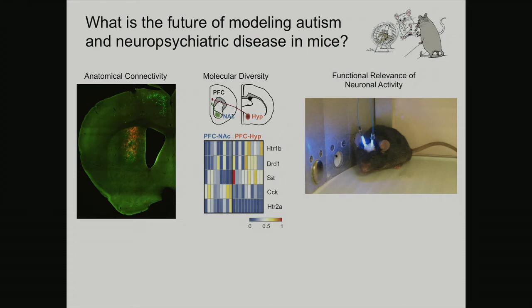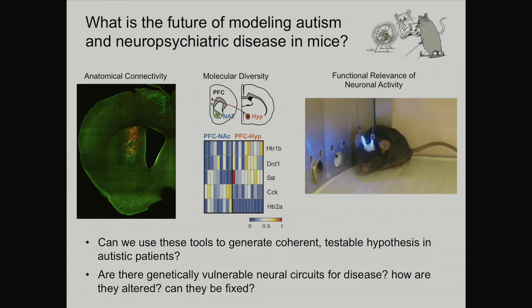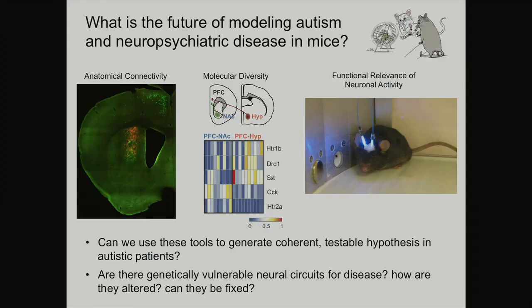We have incredible tools in mice: we can examine very specific types of anatomy — who's connected to whom — and pair that with sequencing to understand things at the molecular level. We also use optogenetics: we put in a protein that allows us to control neural activity with light, manipulating neuronal activity in real time. The key questions moving forward are: can we create hypotheses testable in people, what neural circuits are vulnerable to disease, how are they altered, and how can they be fixed?